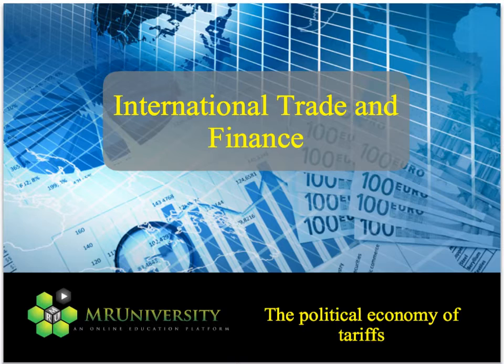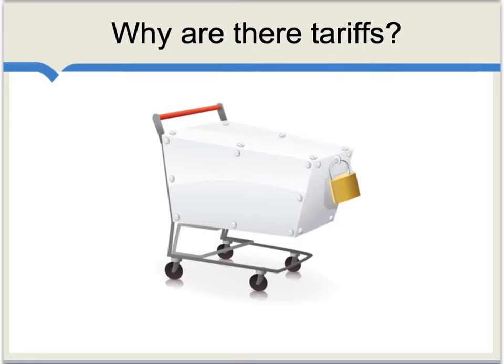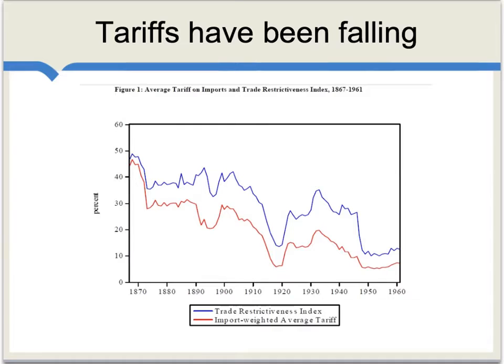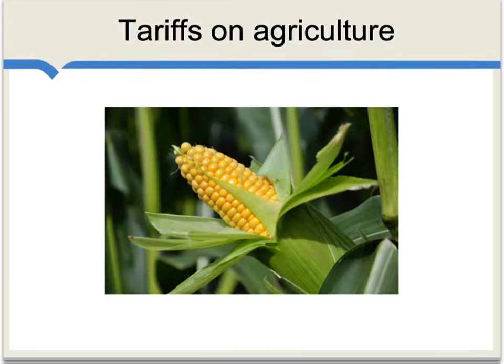Now let's consider the political economy of tariffs — what determines tariffs when we do find them. It's often a puzzle why there are tariffs, since most economists favor free trade, especially for developed nations. Yet tariffs do persist and the world seems to be foregoing some possible gains from trade. Overall, tariffs do seem to be falling, as you can see in the broad contours of this graph, but significant tariffs remain, especially in the United States and Europe, particularly on agriculture.